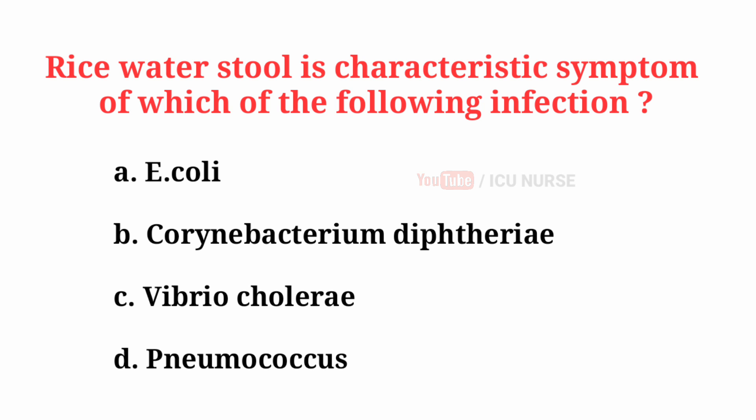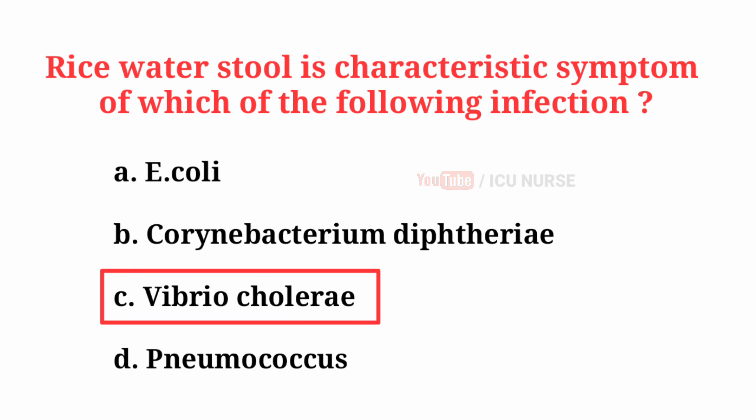Rice water stool is a characteristic symptom of which of the following infections? The correct answer is C, Vibrio cholerae.